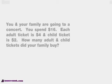Here is an example. You and your family are going to a concert, and you spend $16. Each adult ticket is $4, and each child ticket is $2. How many adult and child tickets did your family buy? So what are all the possibilities that you could spend?